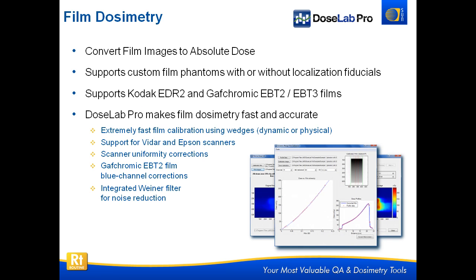Film dosimetry: we have a full film dosimetry package in DoseLab Pro. We convert film images to dose. We support phantoms with or without fiducials. We do Kodak EDR2 film and, of course, Gafchromic EBT2 and 3. Our film calibrations are performed using wedges, either dynamic or physical — it's a very quick and easy calibration method. We support Vidar and Epson scanners, doing uniformity corrections on both: one-dimensional for Vidar, two-dimensional for Epson. We do EBT2 and 3 blue channel corrections, and at the very end we apply a Wiener filter to do a little bit of noise reduction.